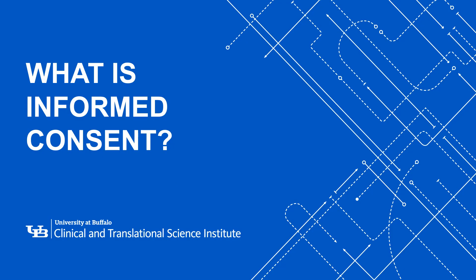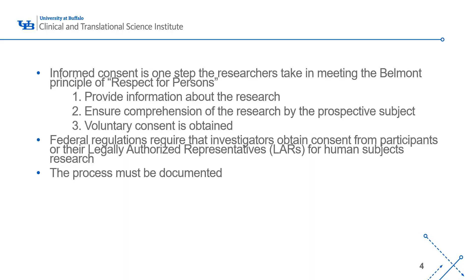So what is informed consent? Informed consent is a focal way that researchers meet the Belmont principle of respect for persons. The consent process provides information about the research to the participants, ensures comprehension of all aspects of the study, and ensures that consent is voluntary. Federal regulations require that investigators obtain consent from participants or their legally authorized representatives for human subjects research, and the process must be documented.